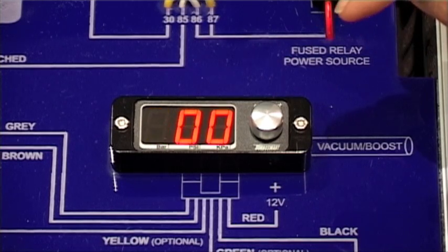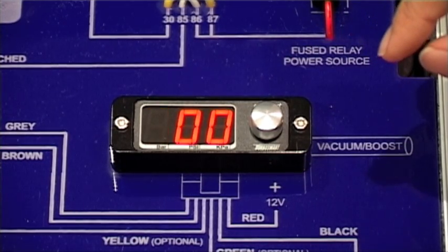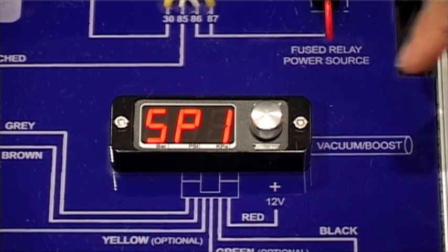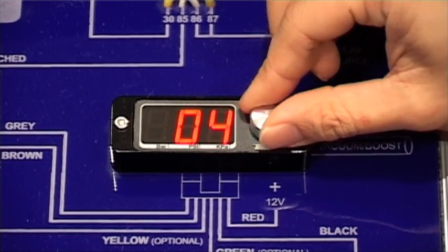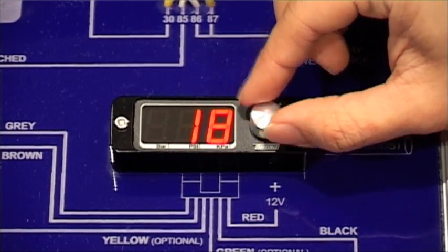Every car will be different and this value must be adjusted to suit your vehicle and your desired boost pressure. To adjust this, press the turn knob and add values. Start off in increments of 10 to 20 numbers.